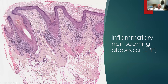Here's a case of early lichen planopilaris. We just have perifollicular inflammation at the level of the isthmus and destruction of the sebaceous glands, but we still have one, two, three, four, maybe five follicles in this biopsy. So they're on their way to being destroyed but haven't been completely destroyed yet — and so this can be confusing.